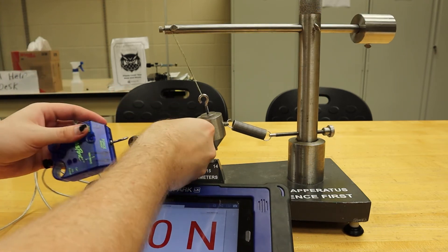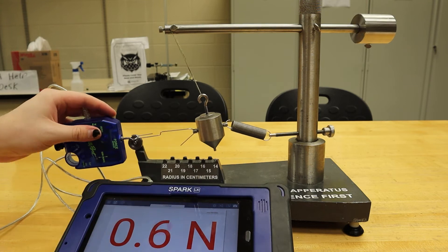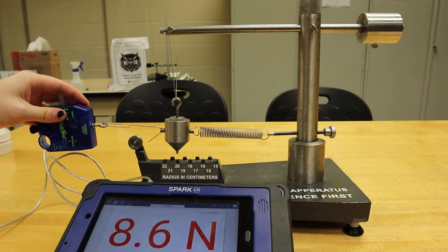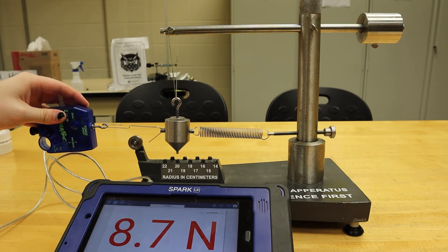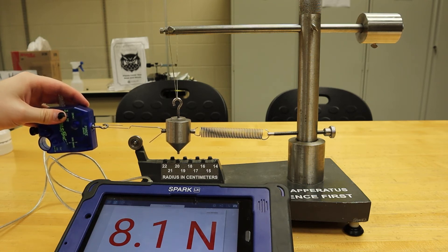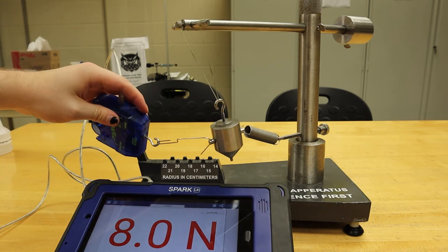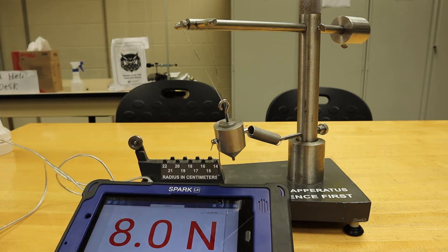press the zero button, hook the force sensor onto the paper clip, and then pull until our bob is over the radius that we have chosen. We will then record this force on our datasheet. You can do this with or without the added mass on the bob.